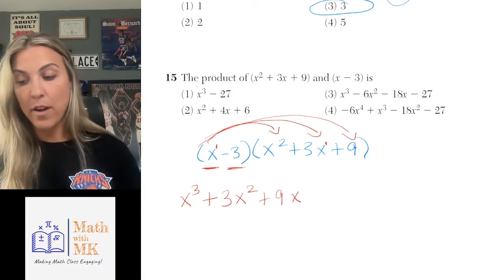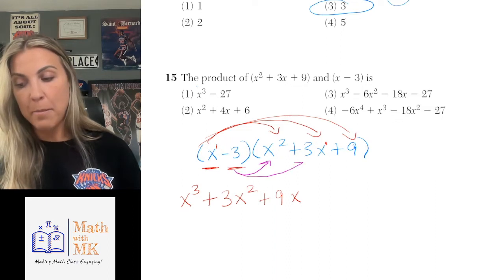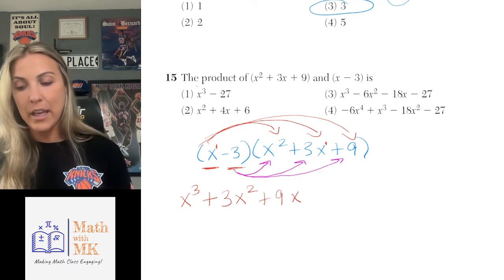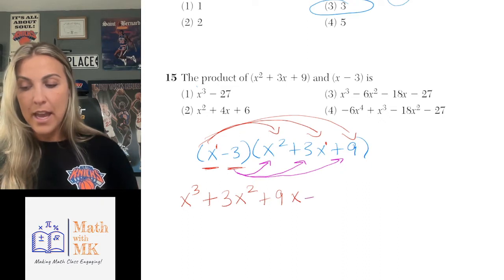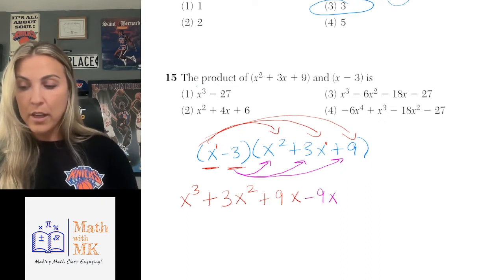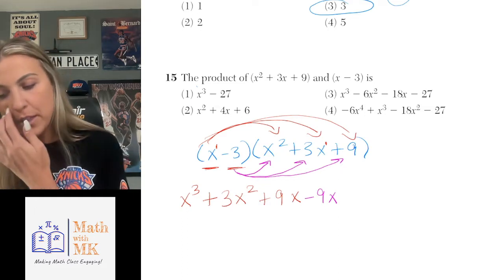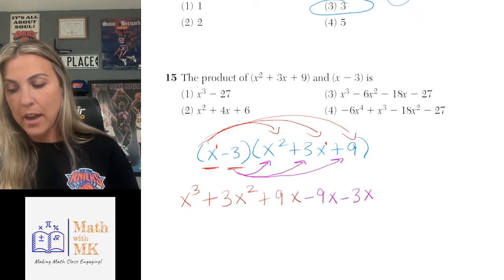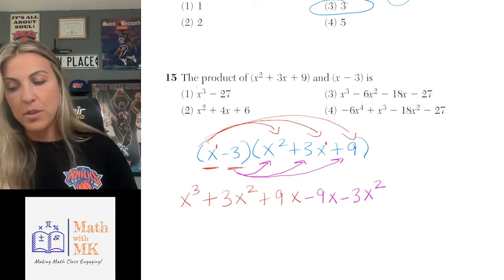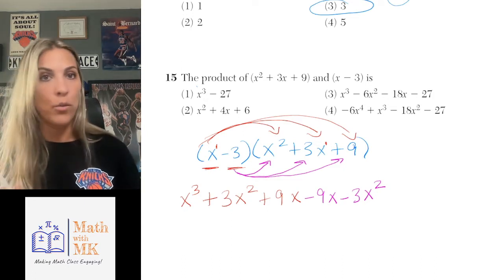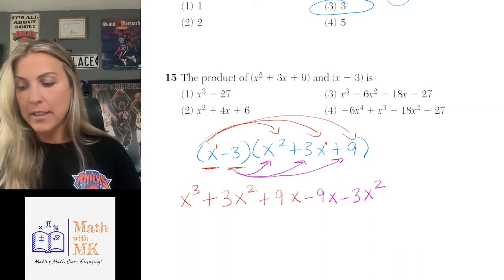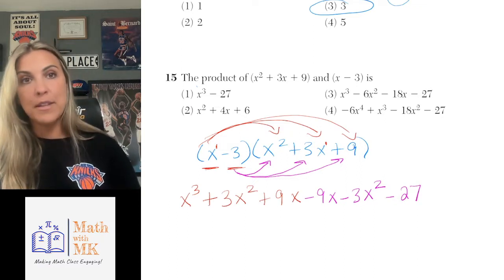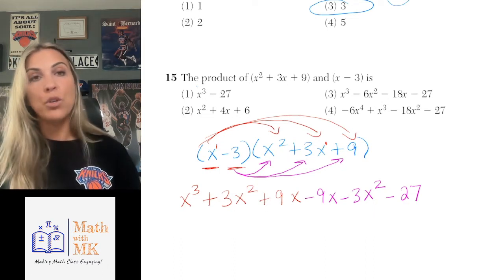Now I move on to the negative 3 — don't forget you take the sign with it. Negative 3 times x squared is negative 3x squared. Negative 3 times 3x is negative 9x. And negative 3 times positive 9 gives me negative 27. So I've multiplied the negative 3 by all the terms in the second parentheses and I'm done. Now I look for like terms to combine — terms must have the same variable and the same exponent.